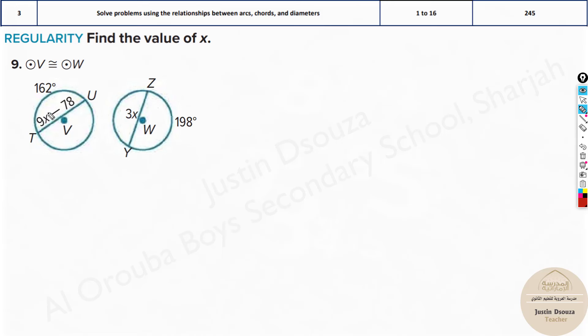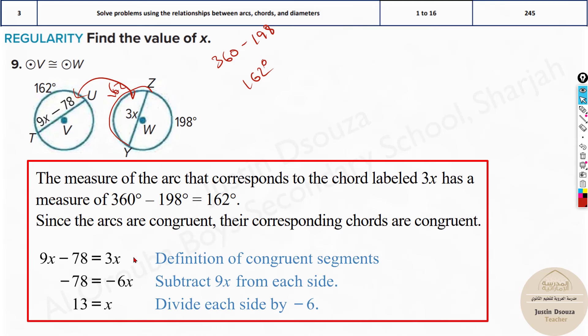Now here in this question, they have told circle V and circle W are congruent. And this chord is given and this is the angle 162. But what about this angle? It's not mentioned. So first, find the measure of this angle, that is 360 minus 198. It will be 60 plus 2 and 100 is there, 162 degrees. Now we know this is also 162. Now we can equate these both. If it was not the same, then no, it was not possible to equate it. So please keep that in mind. In this case, yes, we can equate. But first you need to find the angle and then equate it up.